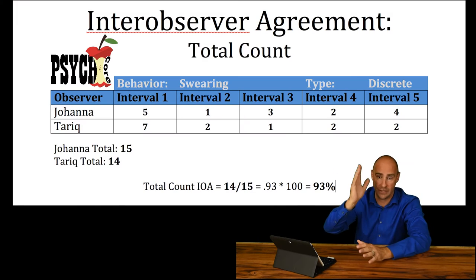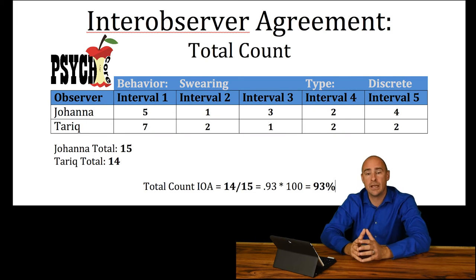All you do is take the total number of instances that person A saw, divide it by the total number of instances that person B saw — smaller divided by the larger. You get the idea.